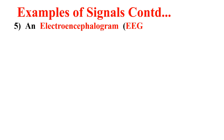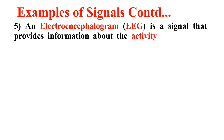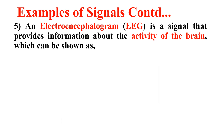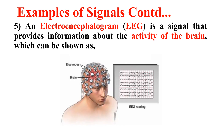The fifth example is an electroencephalogram, that is EEG signal. This is a signal that provides information about the activity of the brain. We place electrodes at the brain and the signals can be plotted, as shown here — this is a electroencephalogram or EEG signal.